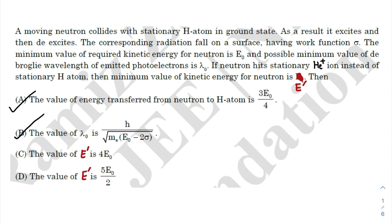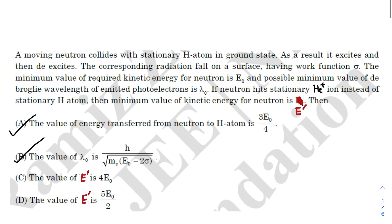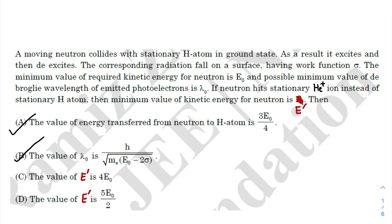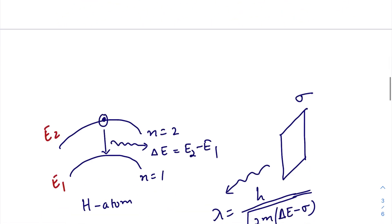For options C and D — they are contradictory to each other, so only one will be correct. E prime is the minimum kinetic energy for the neutron when the hydrogen atom is replaced with a helium-plus ion. Just like E₀ was defined for the hydrogen experiment, E prime is defined for the helium-plus experiment.